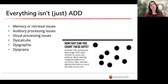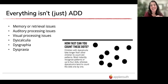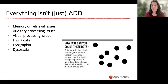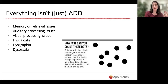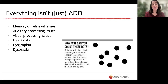There are several other learning differences beyond ADD — your student could have memory or retrieval issues, auditory processing issues, visual processing issues, dyscalculia, dysgraphia, or dyspraxia. Dyscalculia, for instance, isn't just 'dyslexia for numbers.' It does mean a difficulty processing numbers — but if you look at a group of dots, most people count by grouping. If you have dyscalculia, it takes longer because you're counting one by one instead of recognizing a group.